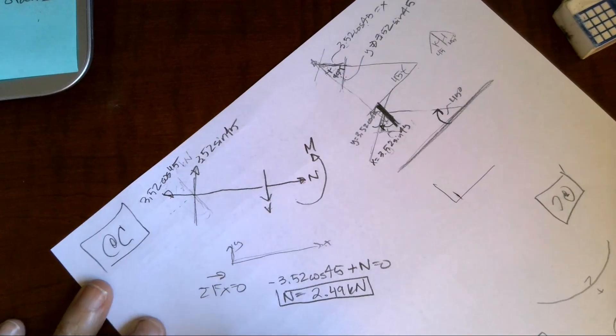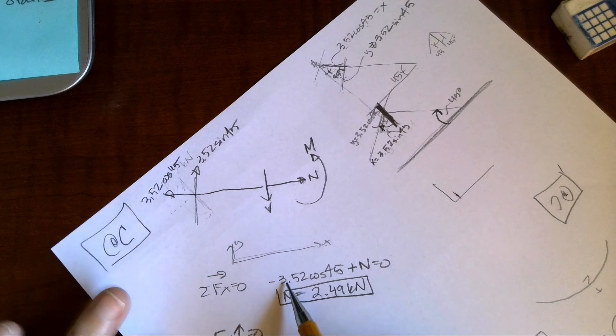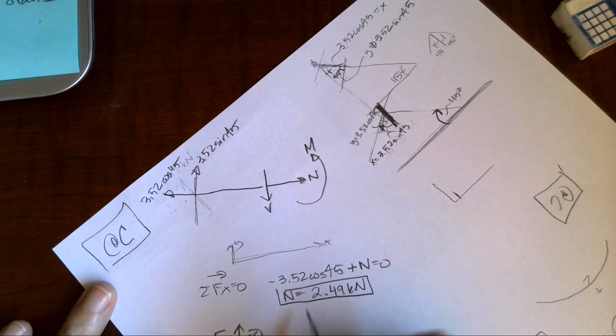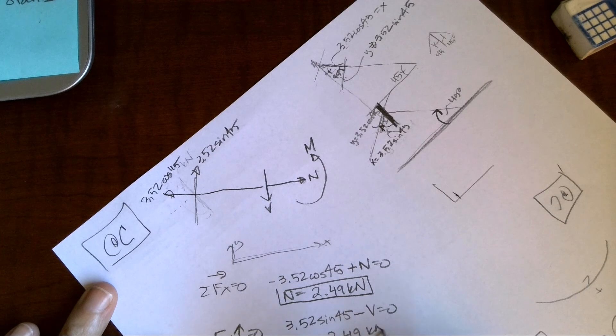I can also sum my forces in the y direction and easily find that we have 3.52 sine 45 minus shear equals zero. So our shear is also a positive 2.49 kilonewtons.